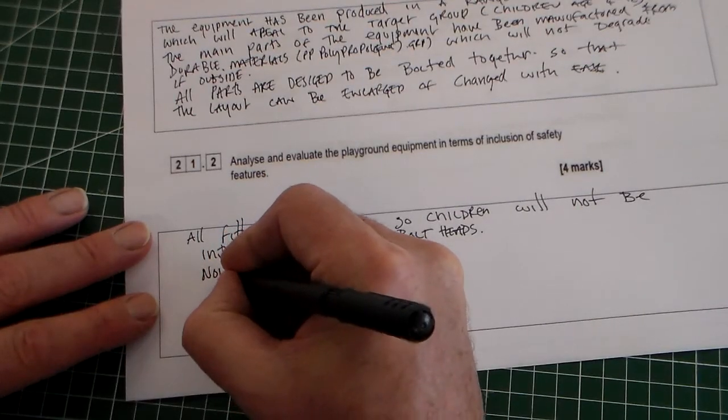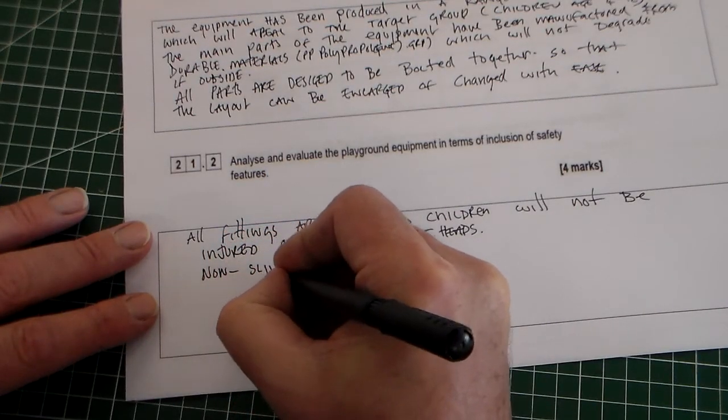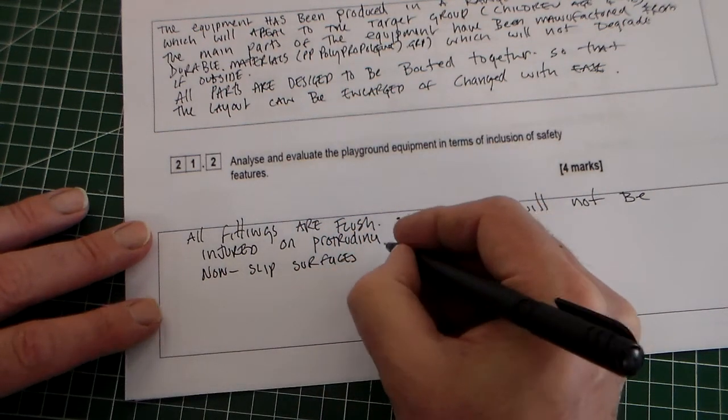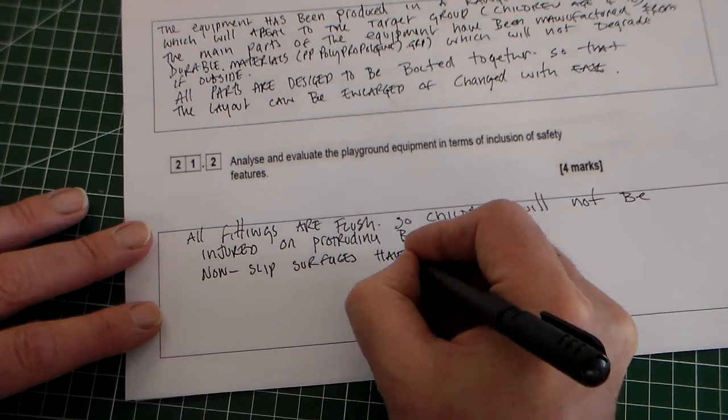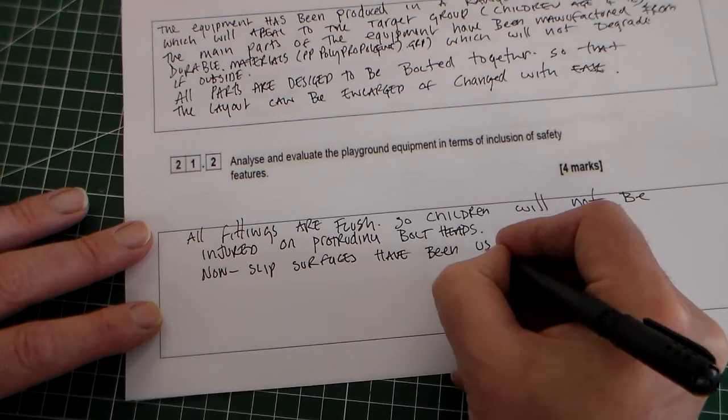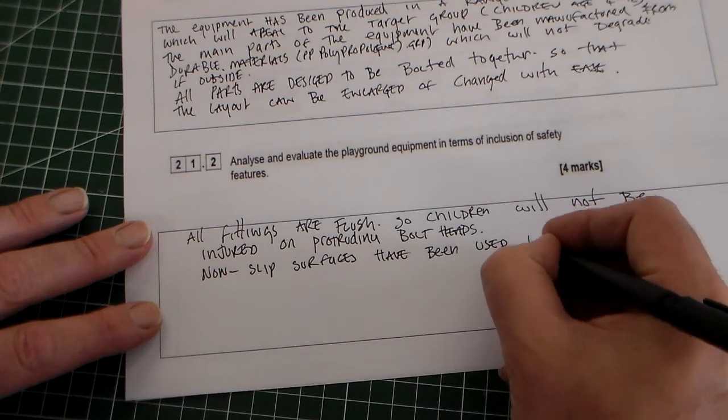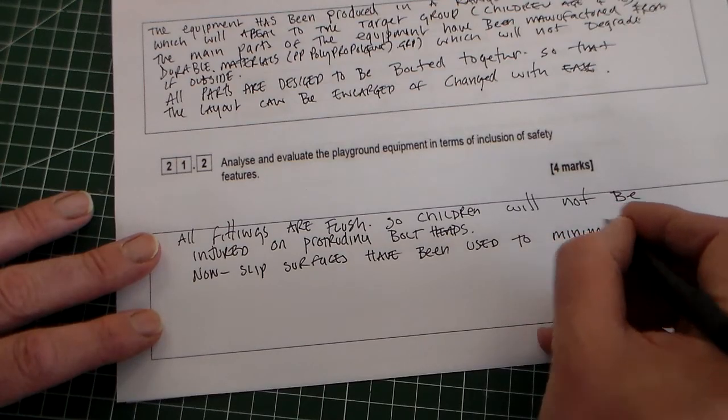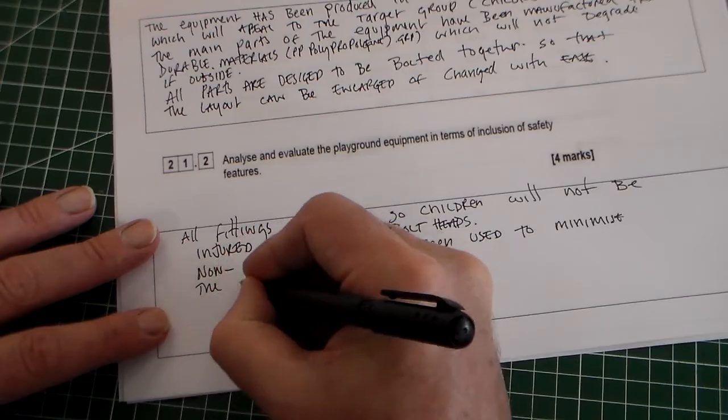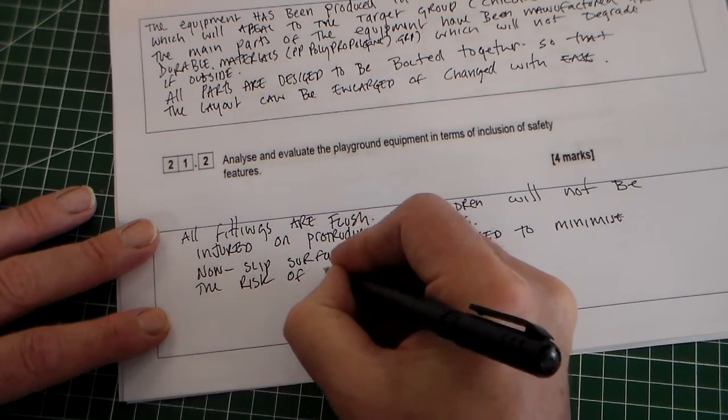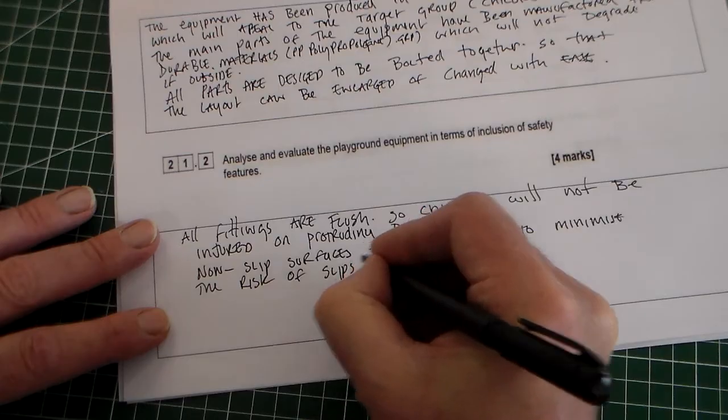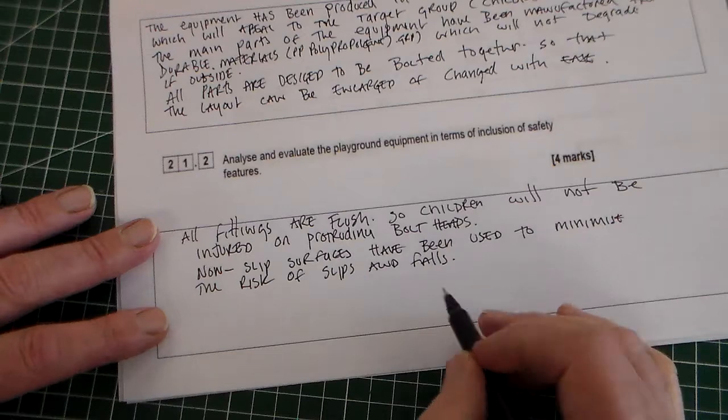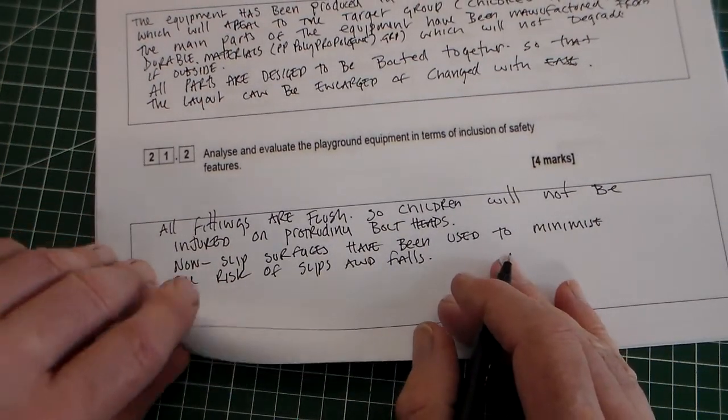And then we can say non-slip surfaces. So if we just mention non-slip surfaces have been used to minimize the risk of slips and falls. I mean you can add something about that in wet because it's obviously meant to be used outside.